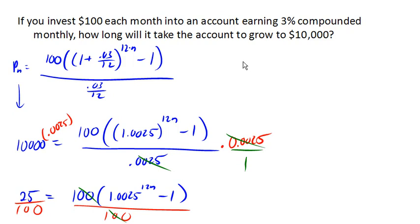So we got .25 equals 1.0025 to the 12n minus 1.